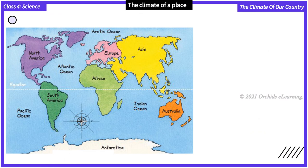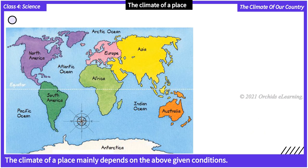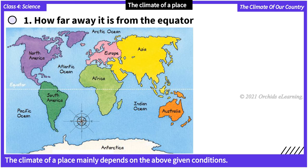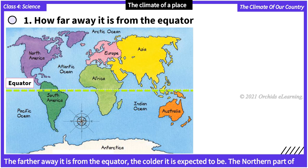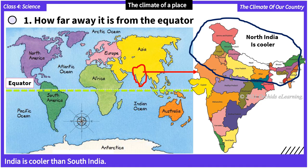The climate of a place mainly depends on: number one, how far away it is from the equator. The farther away it is from the equator, the colder it is expected to be. For example, the northern part of India is cooler than South India.